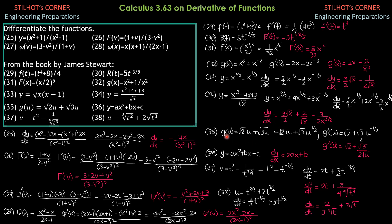Problem 35: G(u) = √(2u) + √3·u. Here u is inside the radical in the first term, while in the second term u is outside. Rewriting: G(u) = √2·u + √3·u^(1/2). Differentiating: G′(u) = √2 · 1 + √3 · (1/2)u^(-1/2), which simplifies to G′(u) = √2 + √3/(2√u). Problem 36: y = ax² + bx + c, so DY/DX or y′ = 2ax + b.